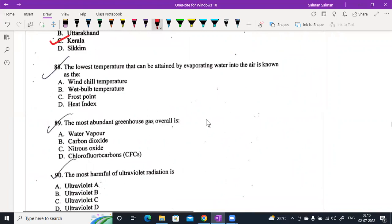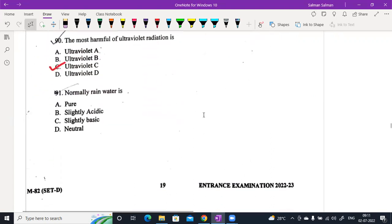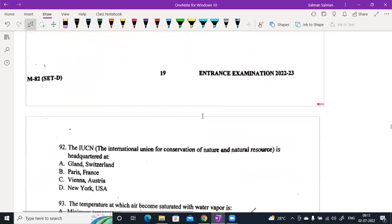The lowest temperature that can be attained by evaporating water into air is known as wet bulb temperature. The most abundant greenhouse gas overall is water. The most harmful of ultraviolet radiation is UVC, ultraviolet C. Normally rainwater is slightly acidic.